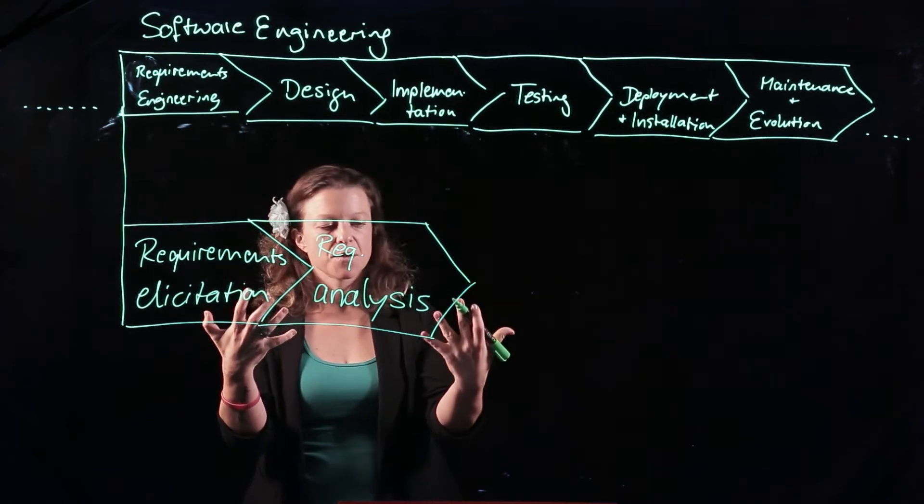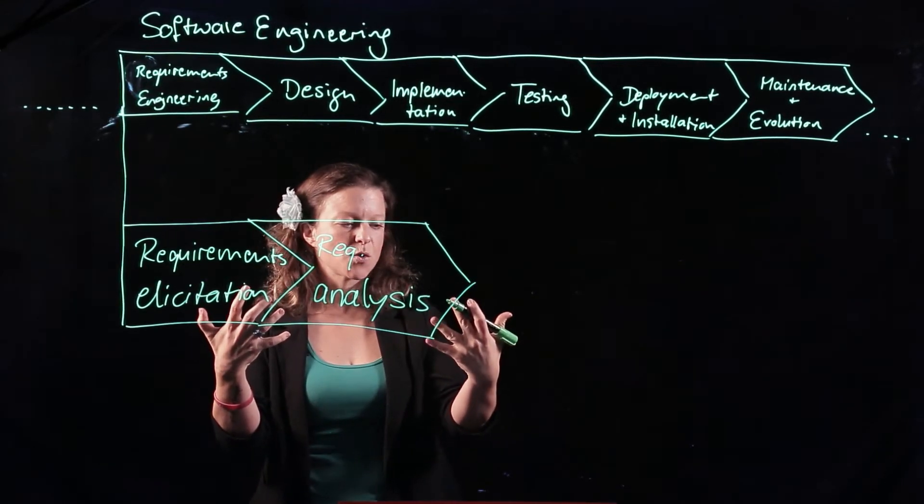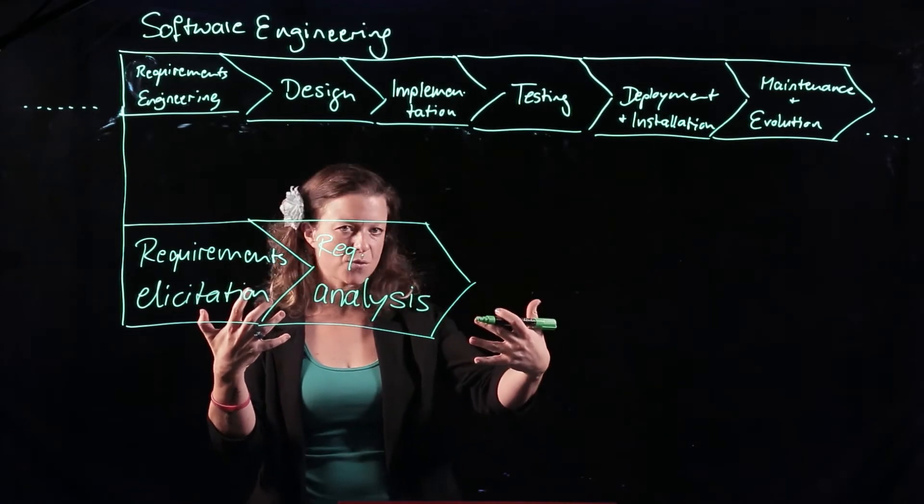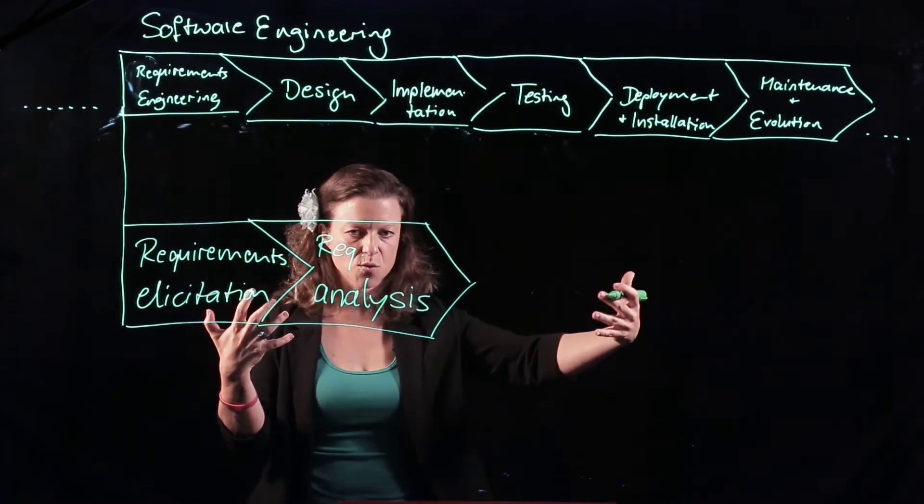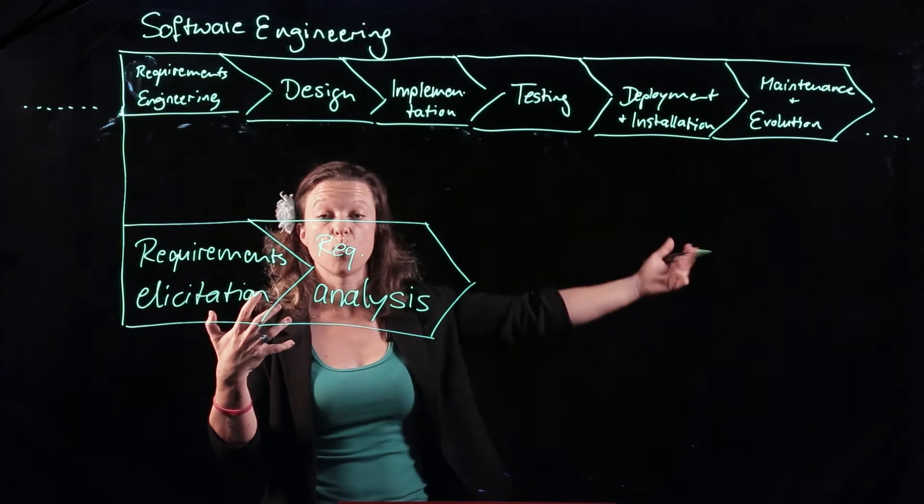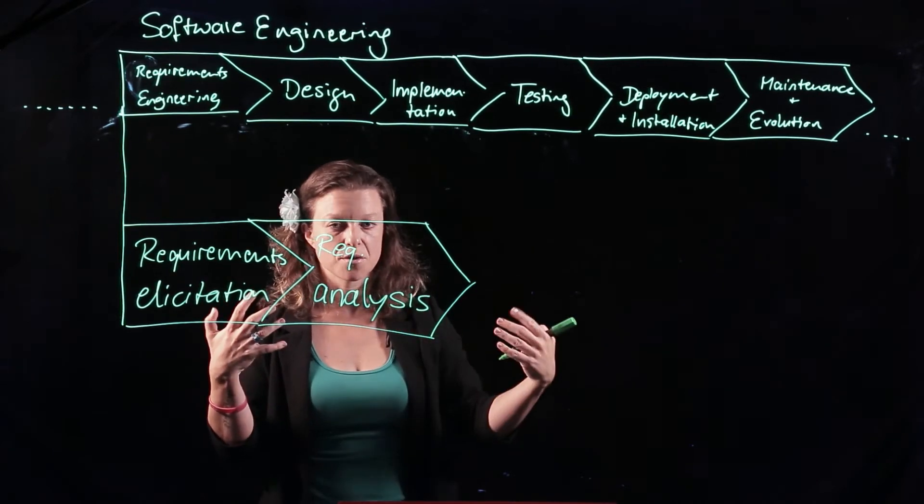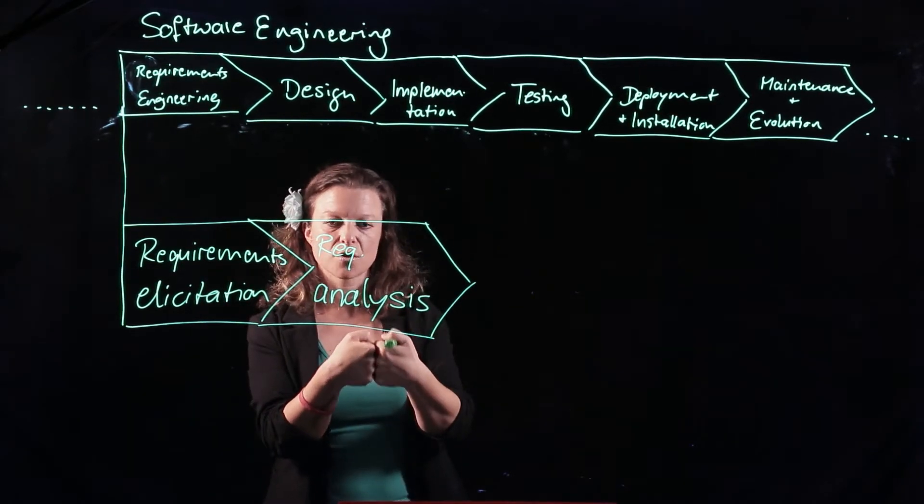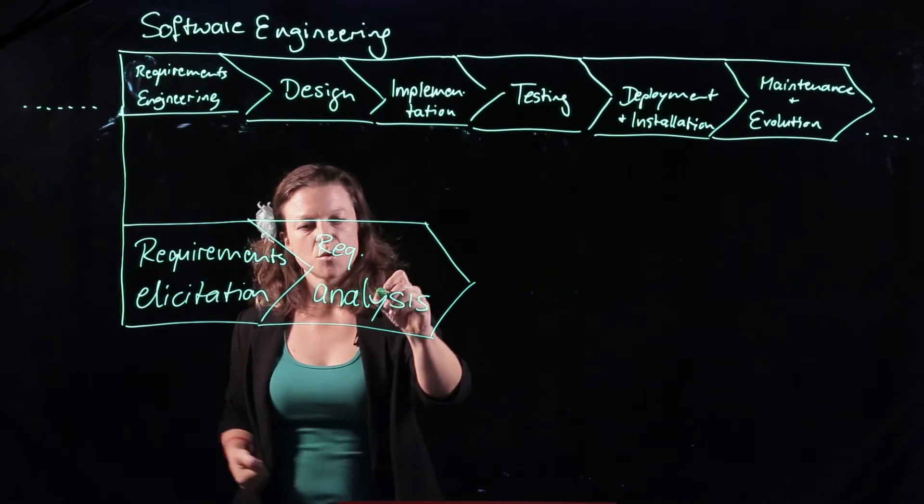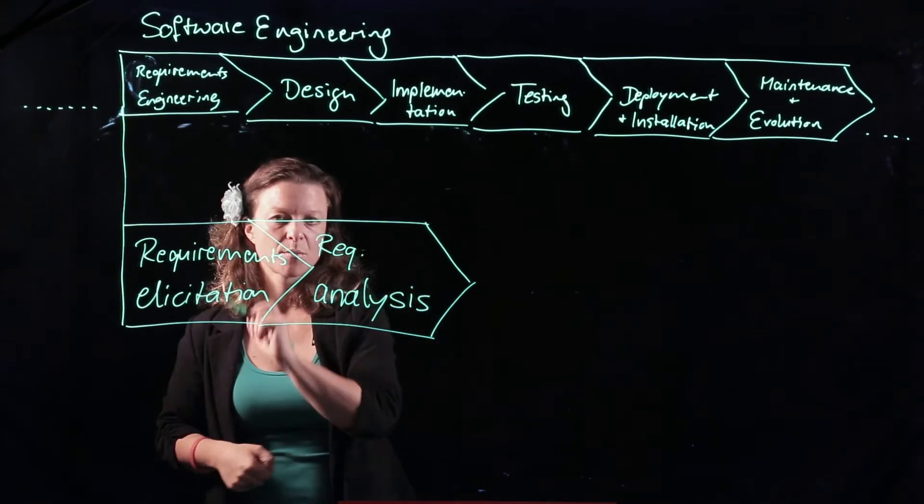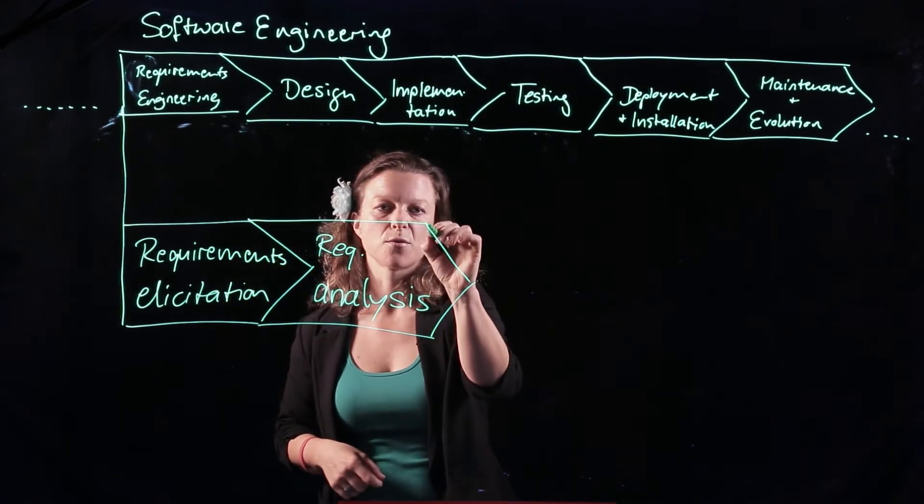we are going to need to stay below $10,000 for the development of this product. And the other requirement says we need to have availability 24 seven, which means we need at least one redundant server, which means we're going to run way over $10,000 budget. So we have a so-called conflict in our requirements, which means we need to go back over here, talk to stakeholders and resolve the conflict.